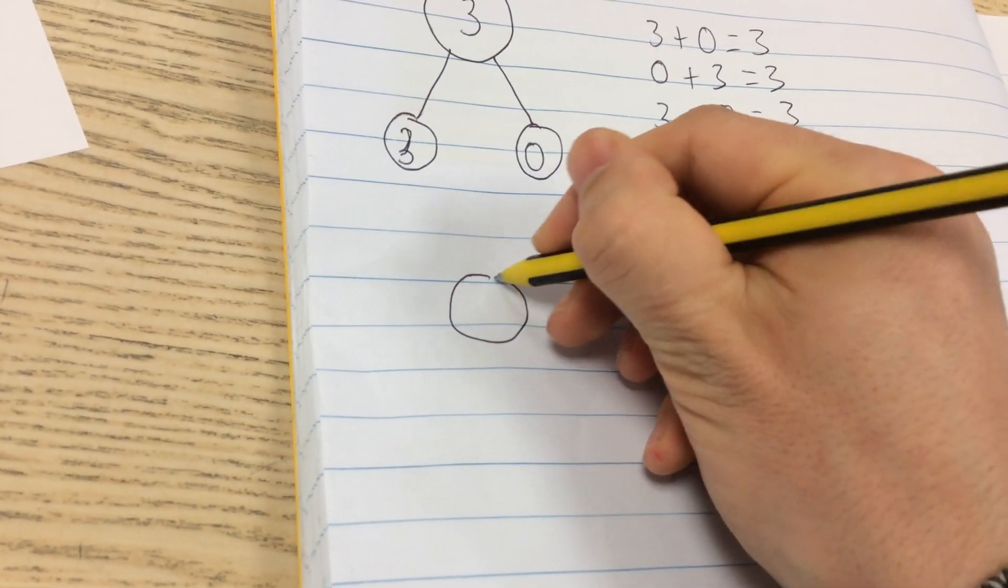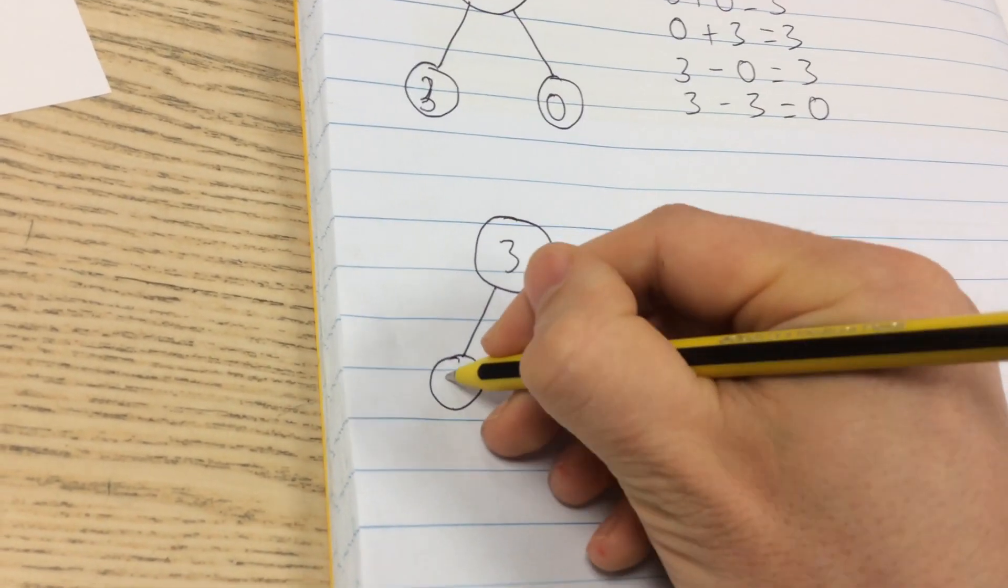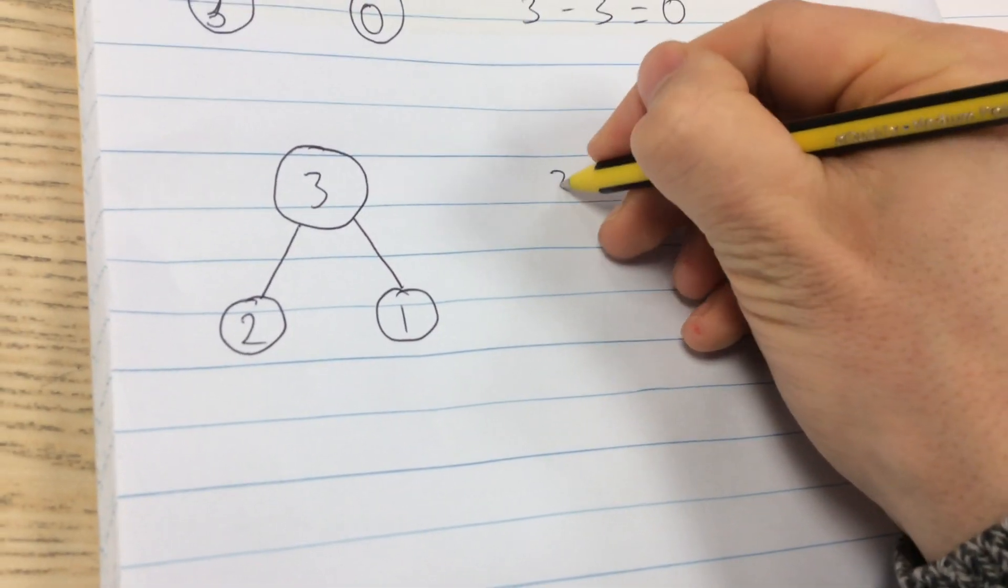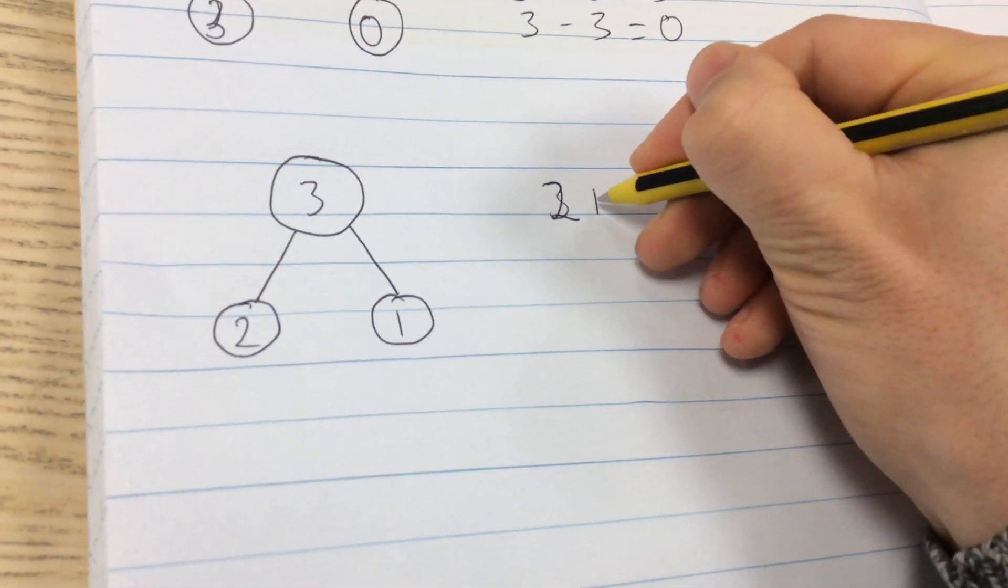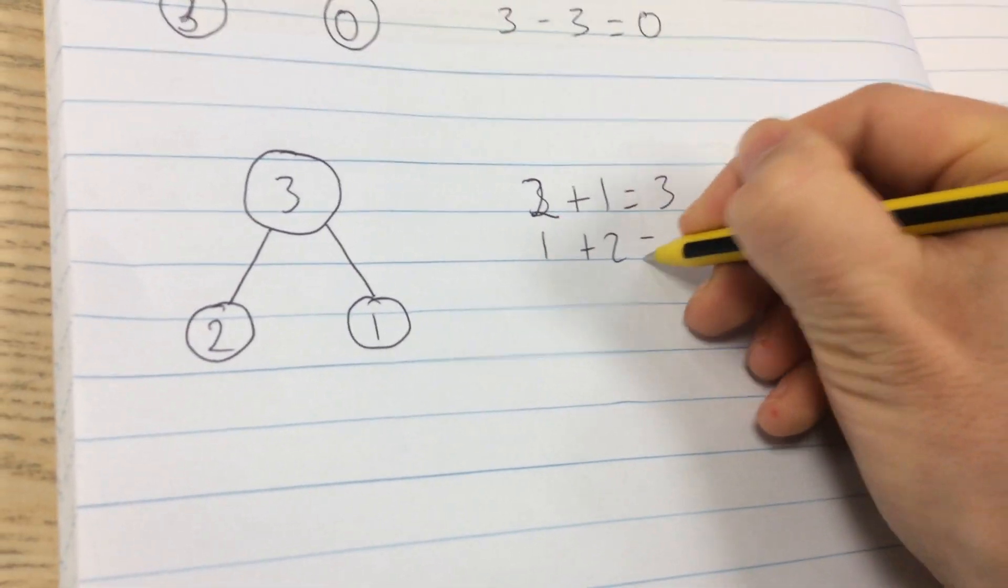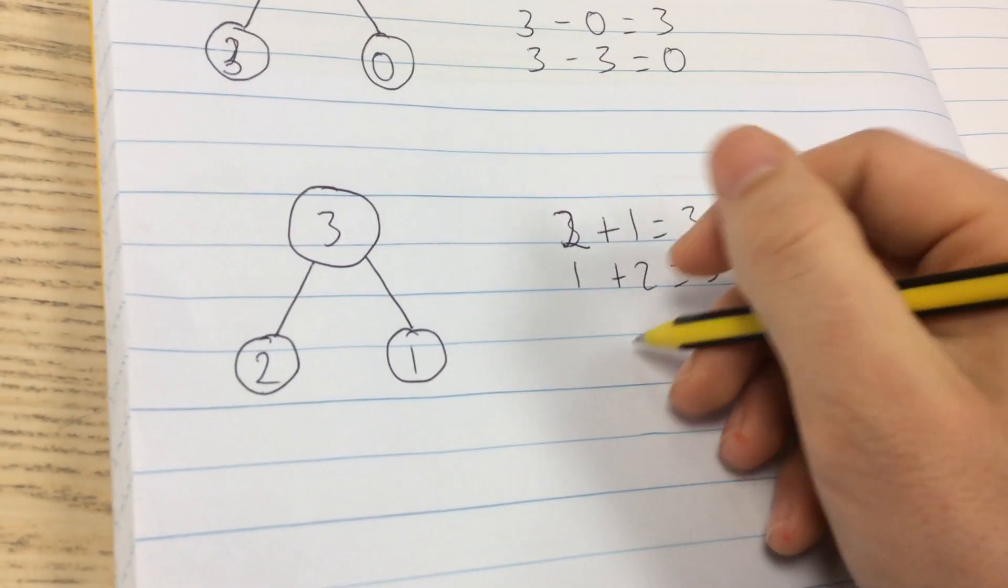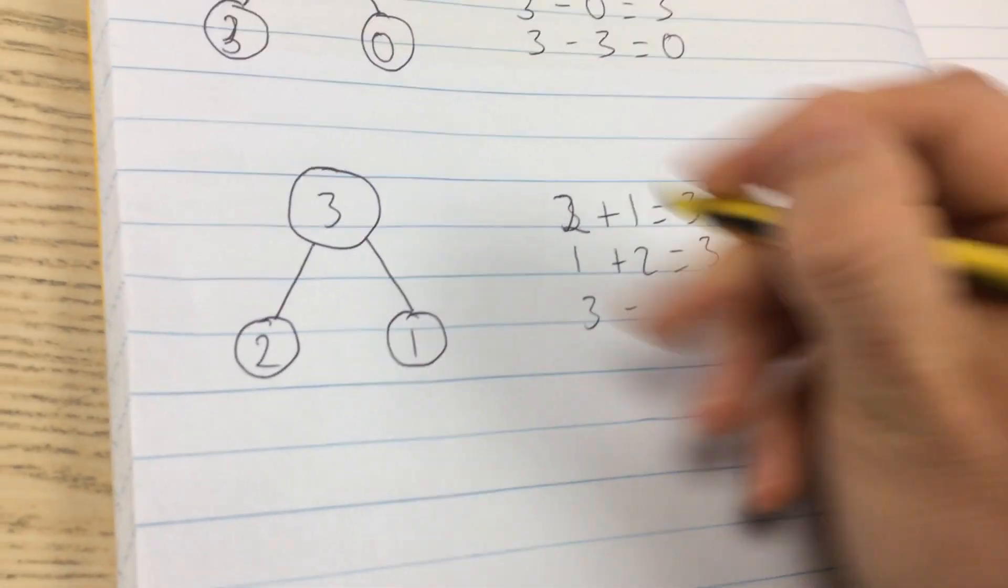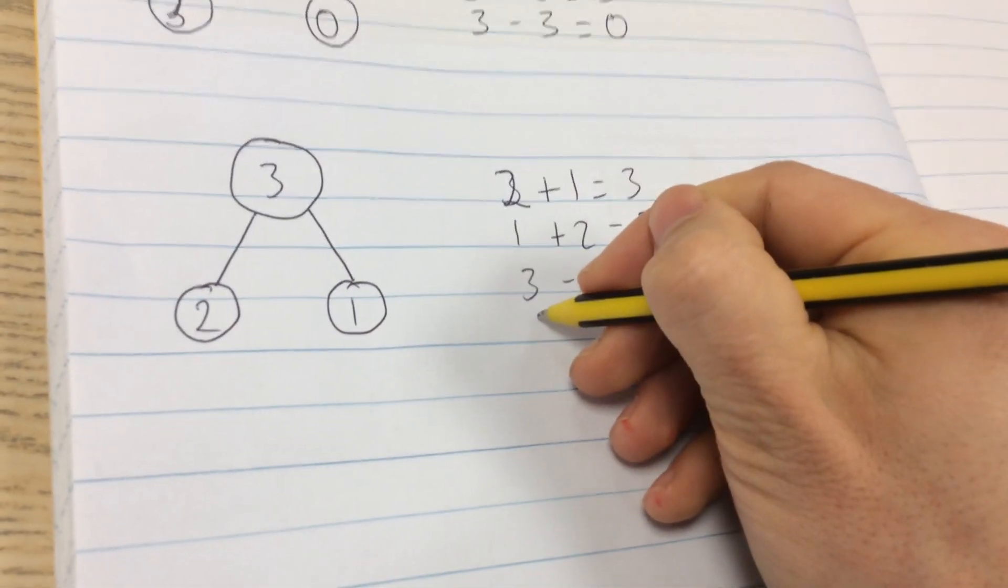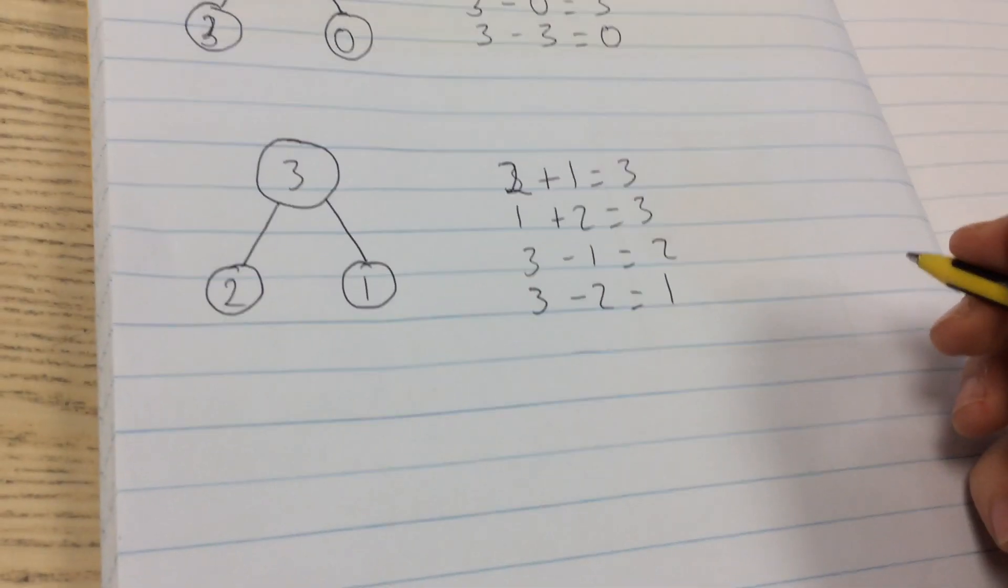And then the same again. You can keep it as 3, 2 different parts. So 2 and we've got 1. And then we can do, sorry, addition number sentences first. 2 add 1 equals 3, 1 add 2 equals 3. As we can see it's commutative. And also then subtraction number sentences. We've got 3 take away 1 equals 2 and then 3 take away 2 equals 1.